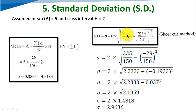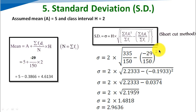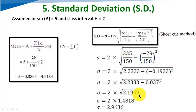Applying all the data to the shortcut formula: h equals 2 (the class interval); sigma fi·Di squared is 335; sigma fi (total) is 150; and sigma fi·Di is minus 29. We calculate: 29 divided by 150 gives 0.1933, raised to 2 gives 0.0374. Then 335 divided by 150 gives 2.2333. Deducting 0.0374 from 2.2333 gives 2.1959. Taking the square root of 2.1959 and multiplying by 2 gives sigma equals 2.9636.